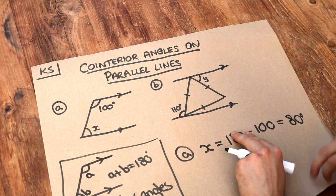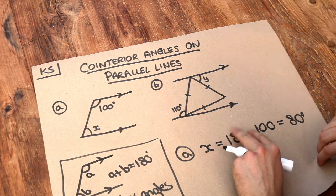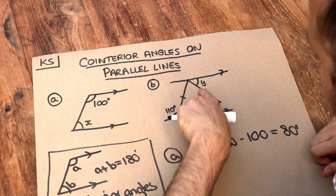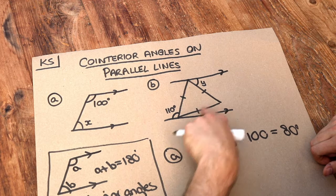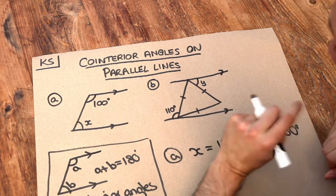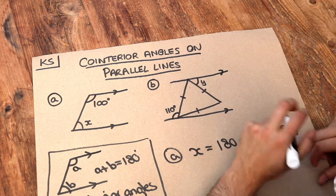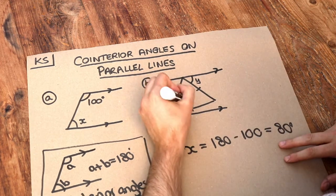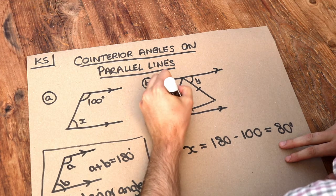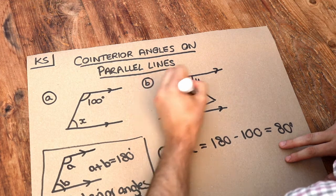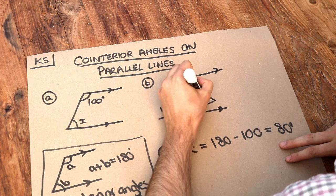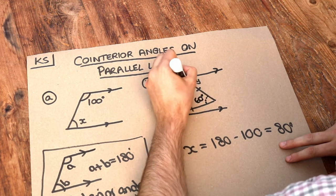This second one is a bit harder because we've got more going on. Note that these marks indicate that these three lengths are equal, so that must be an equilateral triangle, and the interior angles of an equilateral triangle are 60 degrees. So let's put those in first.